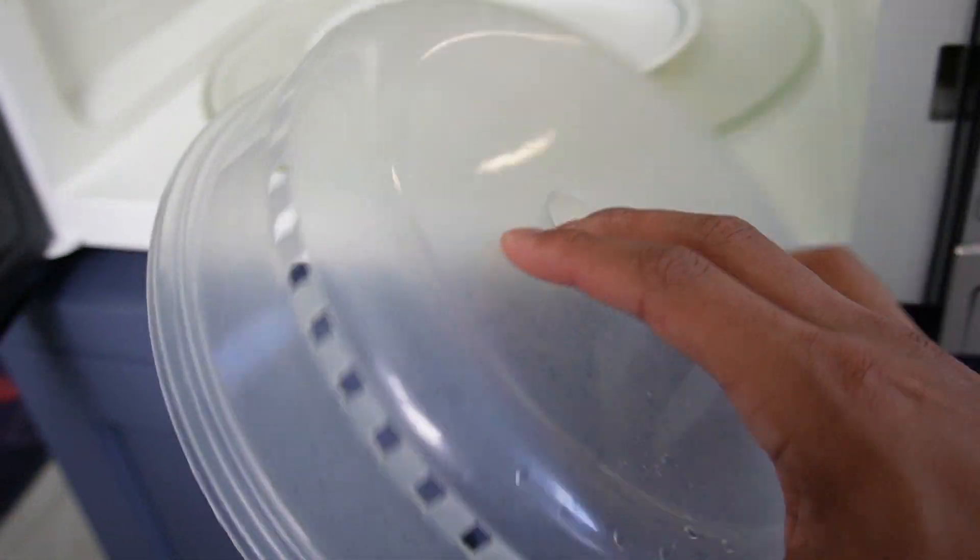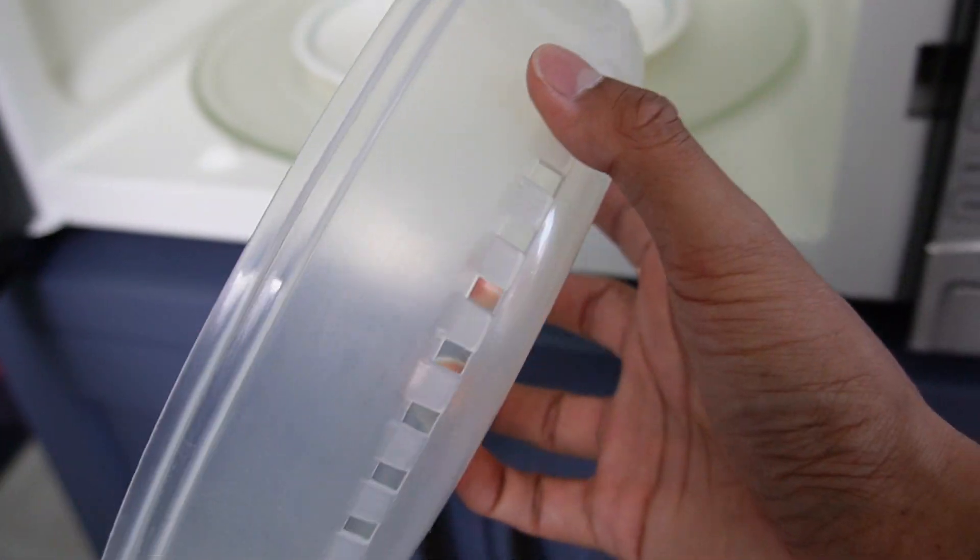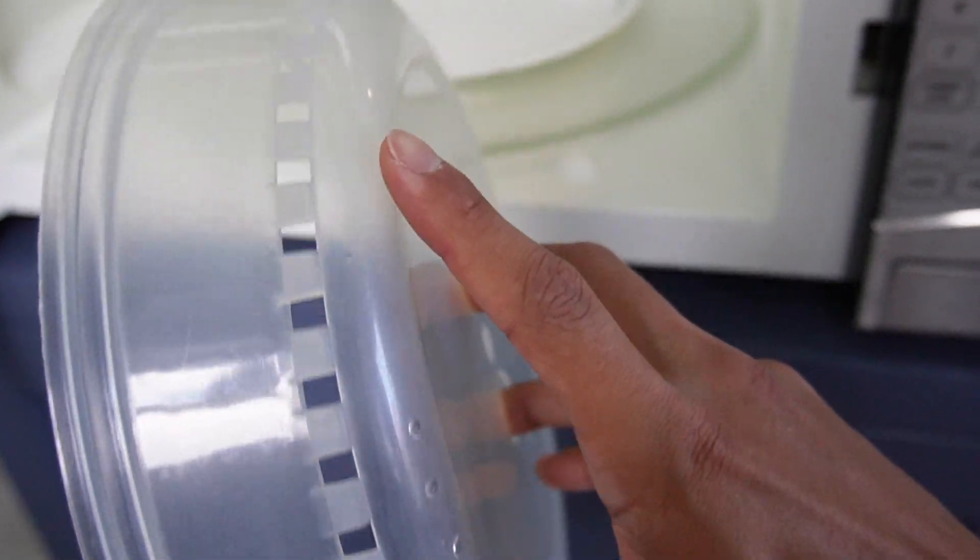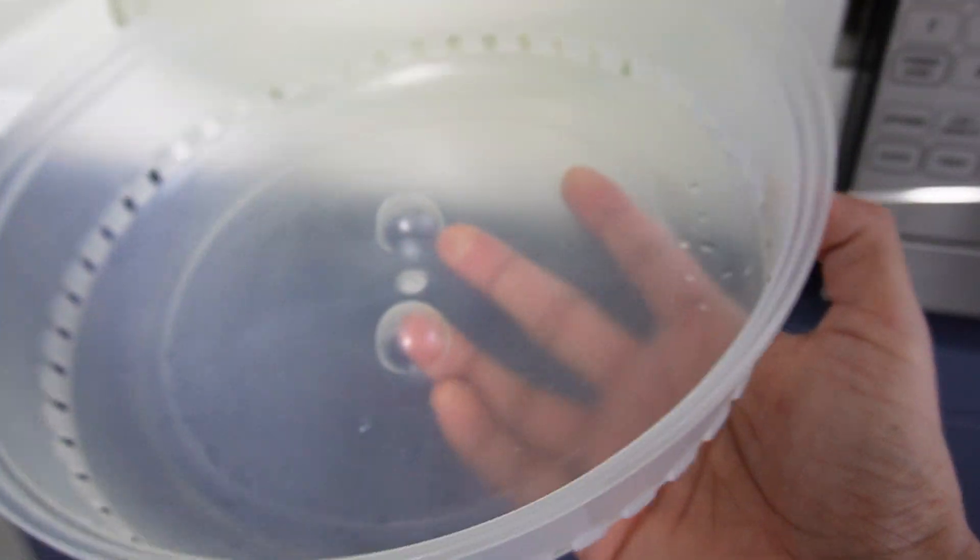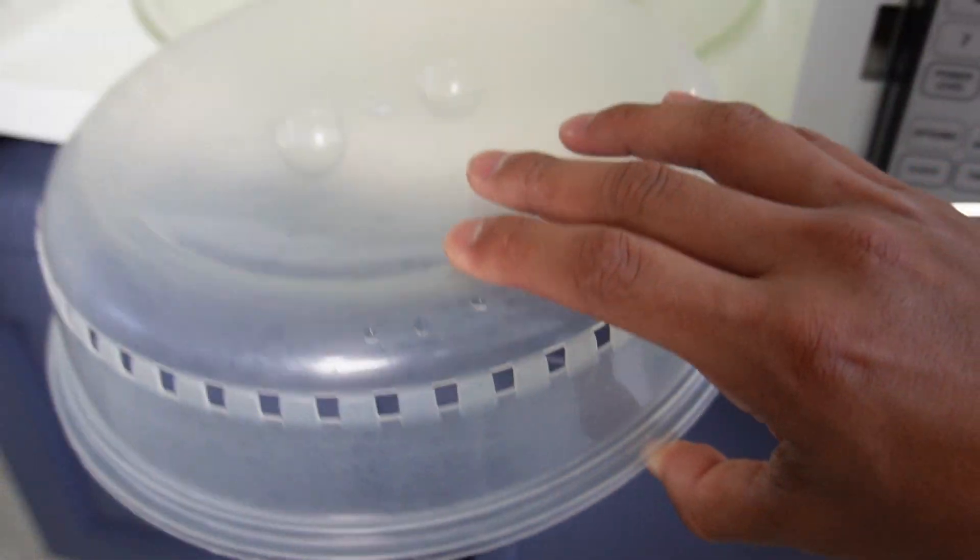Haven't had any problems with this breaking and it's real easy to go ahead and clean. It also has these holes just for air to go through. But yeah, that's a quick overview of the microwave cover.